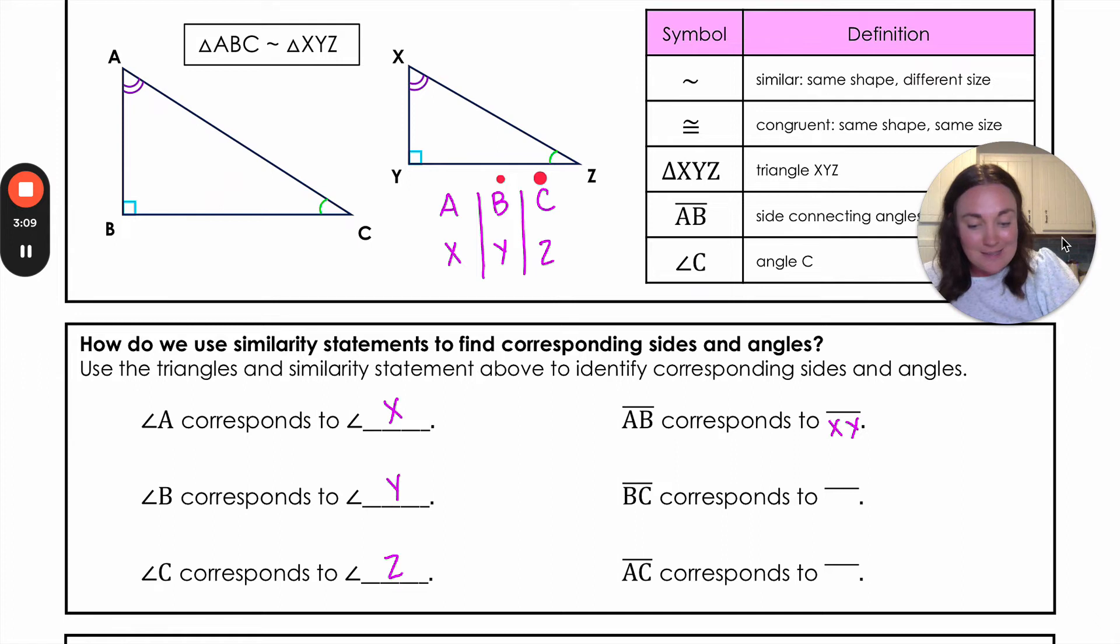BC is going to correspond with YZ. And AC is going to correspond with XZ. That's how we take that similarity statement and turn it into our corresponding sides and angles.